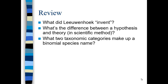The two taxonomical categories making up a binomial species name, like Homo sapiens or Escherichia coli, would be genus and species. Selection pressure is a part of the theory of evolution: when environmental conditions favor certain organisms, different traits and organisms are selected over and against other traits merely because of environmental change.